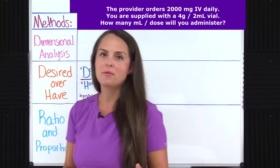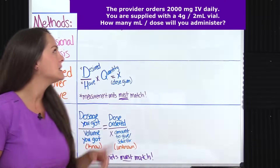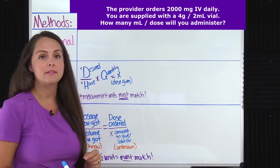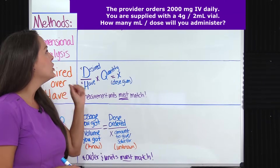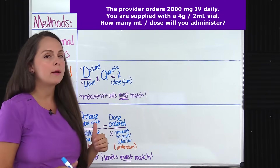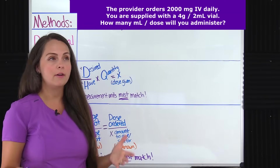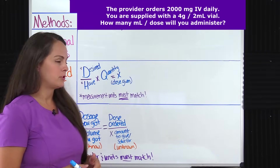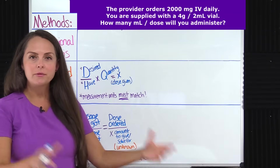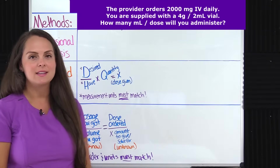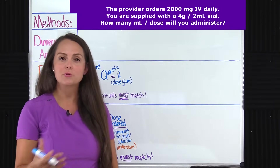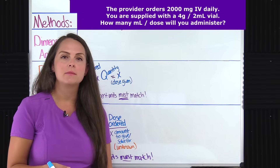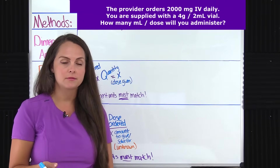First, let's review our problem. It says the provider orders 2000 milligrams IV daily. You're supplied with a four gram per two ml vial. How many milliliters per dose will you administer? So after reading that, what you get from this is that you have this order to give a patient 2000 milligrams once a day — so one dose.